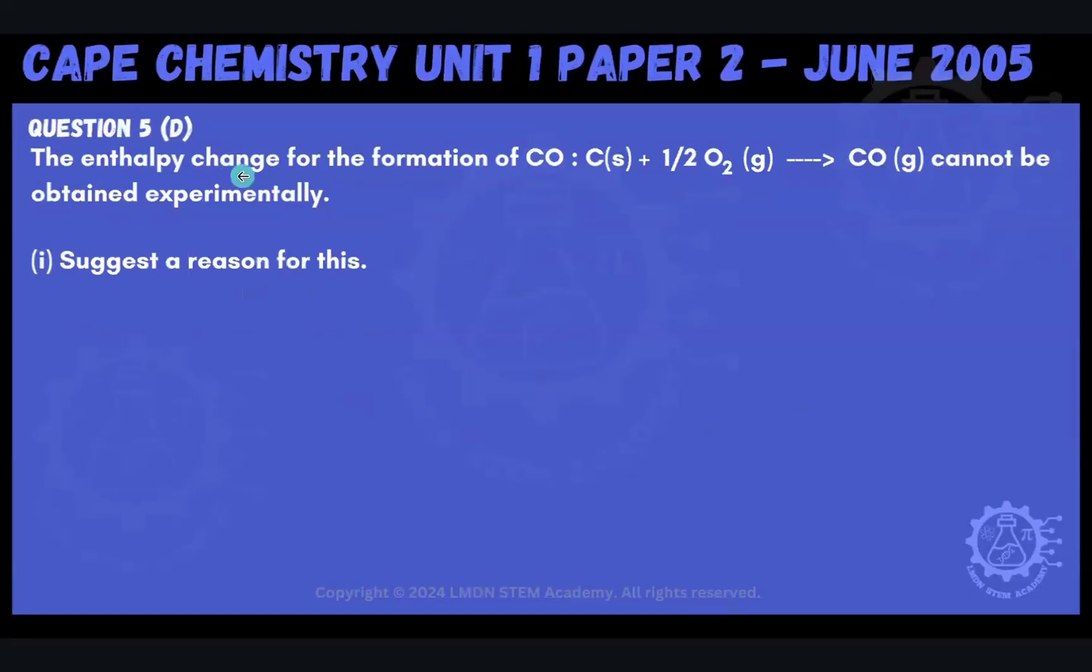Part D says the enthalpy change for the formation of carbon monoxide can be written as carbon solid added to half mole of oxygen gas to form carbon monoxide gas. But that process cannot be obtained experimentally. Why might that be? They want us to suggest a reason for that.